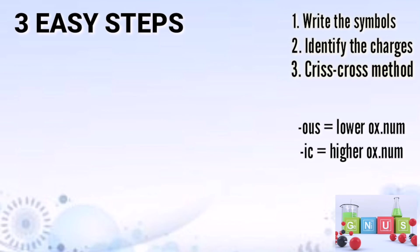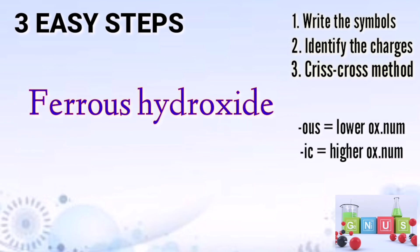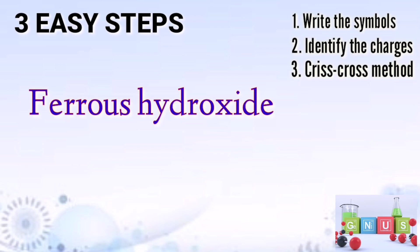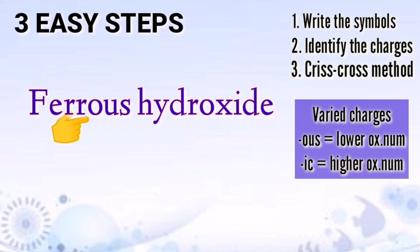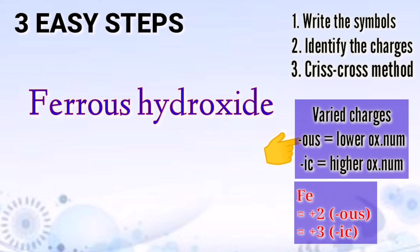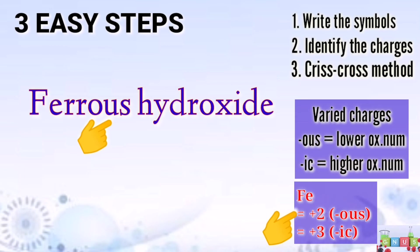Let's have our next example. We have ferrous hydroxide. Take note, we have here the suffix OUS. That means iron used its lower oxidation number. Always remember that iron has two oxidation numbers: positive 2 and positive 3. Positive 2 is the lower oxidation number. That's why the suffix is OUS.